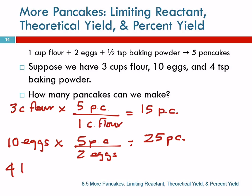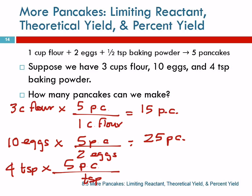And 4 teaspoons times — stay with me, please — 5 pancakes per half teaspoon. Half gets messy when you're using your calculator, so convert it to a decimal, 0.5. That's 40 pancakes: 4 times 5 divided by 0.5. Yeah, 40.